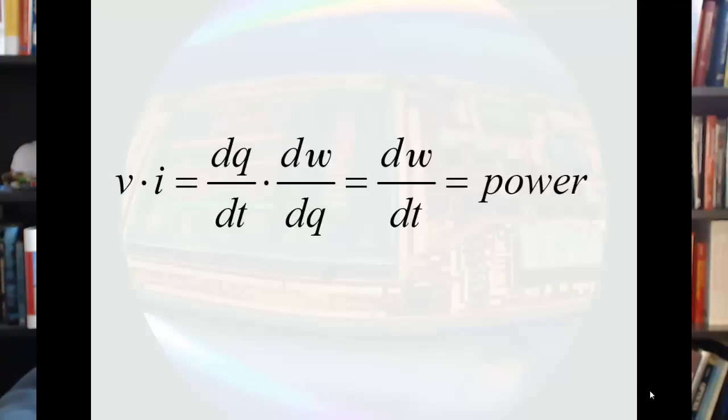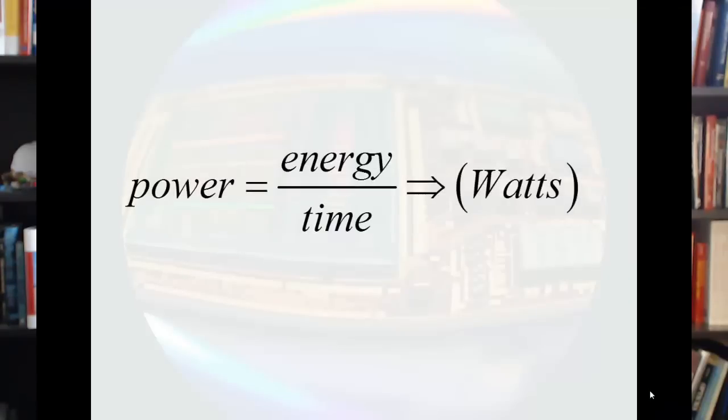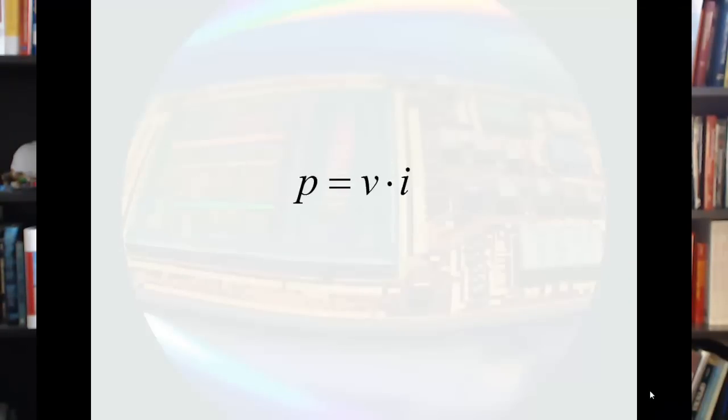So, if we put these together, the product of voltage times current gives us the derivative of charge with respect to time times the derivative of energy with respect to charge. The charges cancel and we have the derivative of the energy with respect to time, and that's called power. Power measures the amount of energy per unit time. Power is equal to voltage times current. The unit of power is the watt.